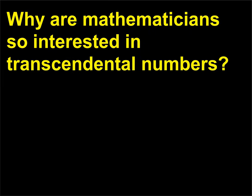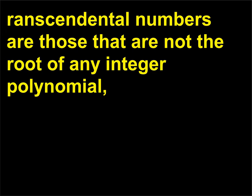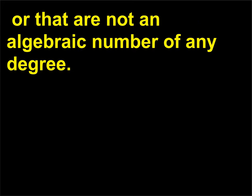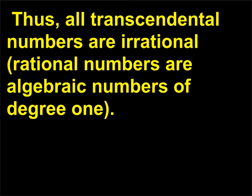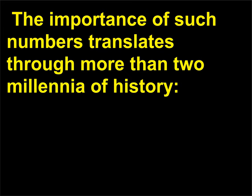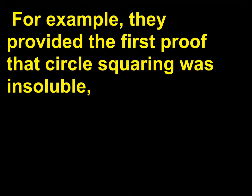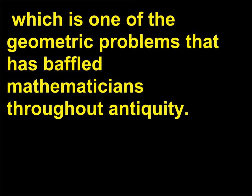Why are mathematicians so interested in transcendental numbers? Transcendental numbers are those that are not the root of any integer polynomial, or that are not an algebraic number of any degree. Thus, all transcendental numbers are irrational; rational numbers are algebraic numbers of degree 1. The importance of such numbers translates through more than two millennia of history. For example, they provided the first proof that circle squaring was insoluble, which is one of the geometric problems that has baffled mathematicians throughout antiquity.